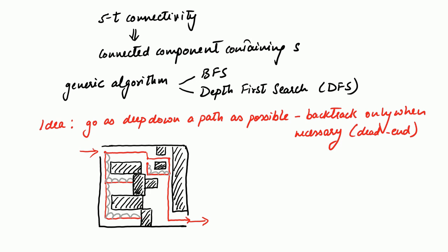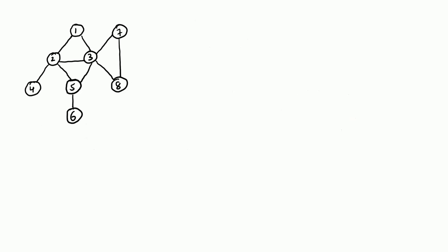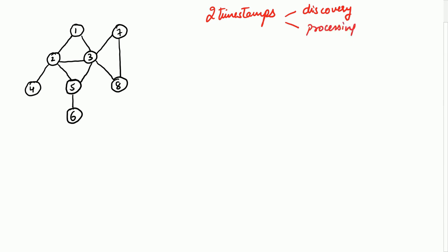Let us try to understand how DFS works through an example. We will run the depth first search procedure on this given graph, and to understand well what is really happening in the procedure, we will use timestamps. We will associate two timestamps with every node. The first timestamp will be when this node was discovered, and the second timestamp will be when the processing of this node is complete. You increment the timestamp every time you discover a new node or are done with the processing of a particular node.